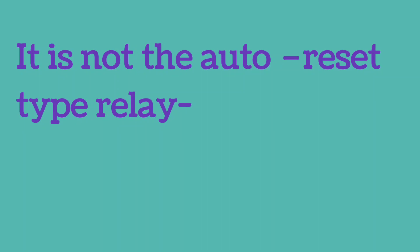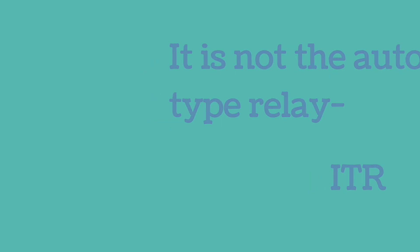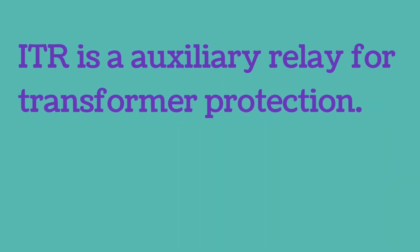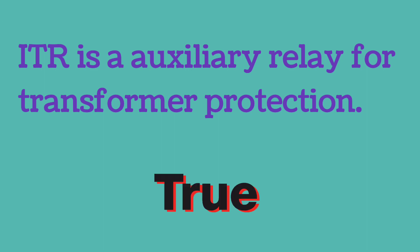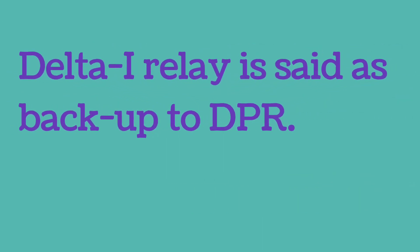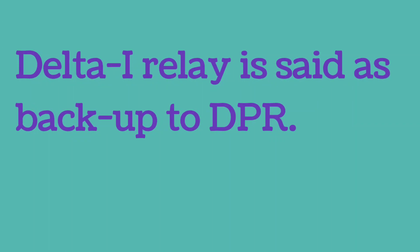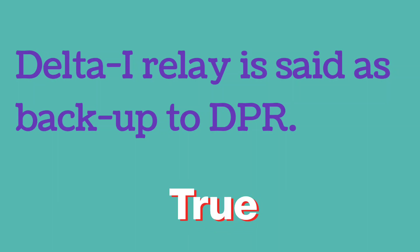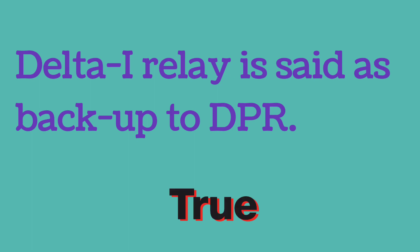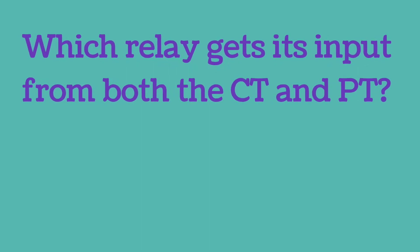The relay which is not of auto reset type is the ITR relay. ITR is an auxiliary relay for transformer protection — this statement is true. Delta 1 relay is said to be a backup to DPR — this statement is also true.